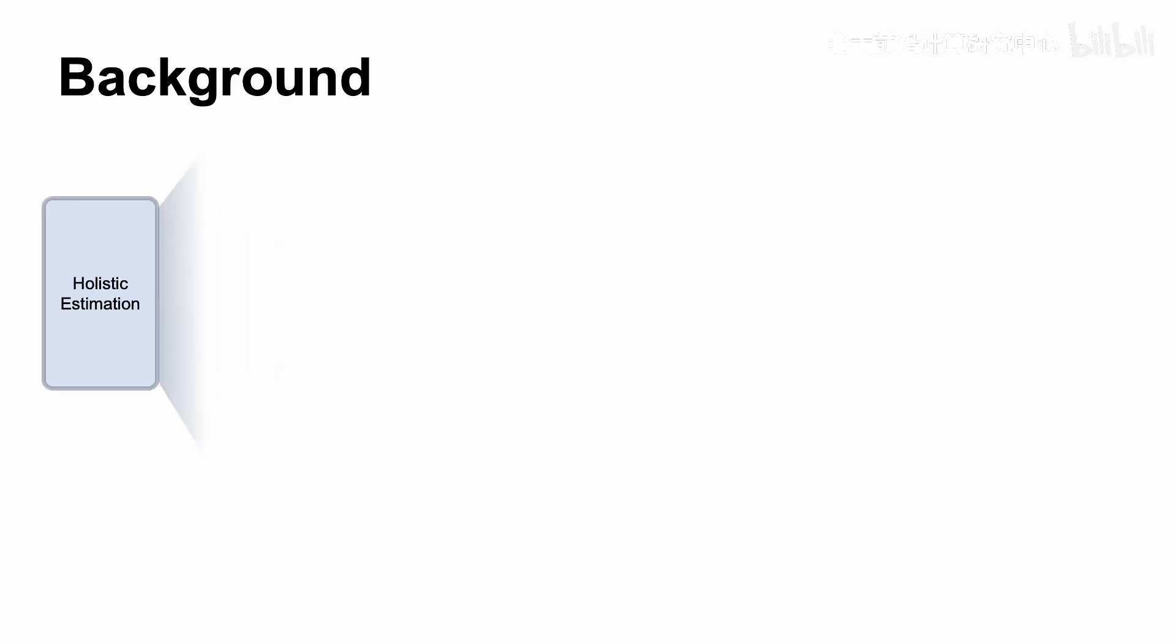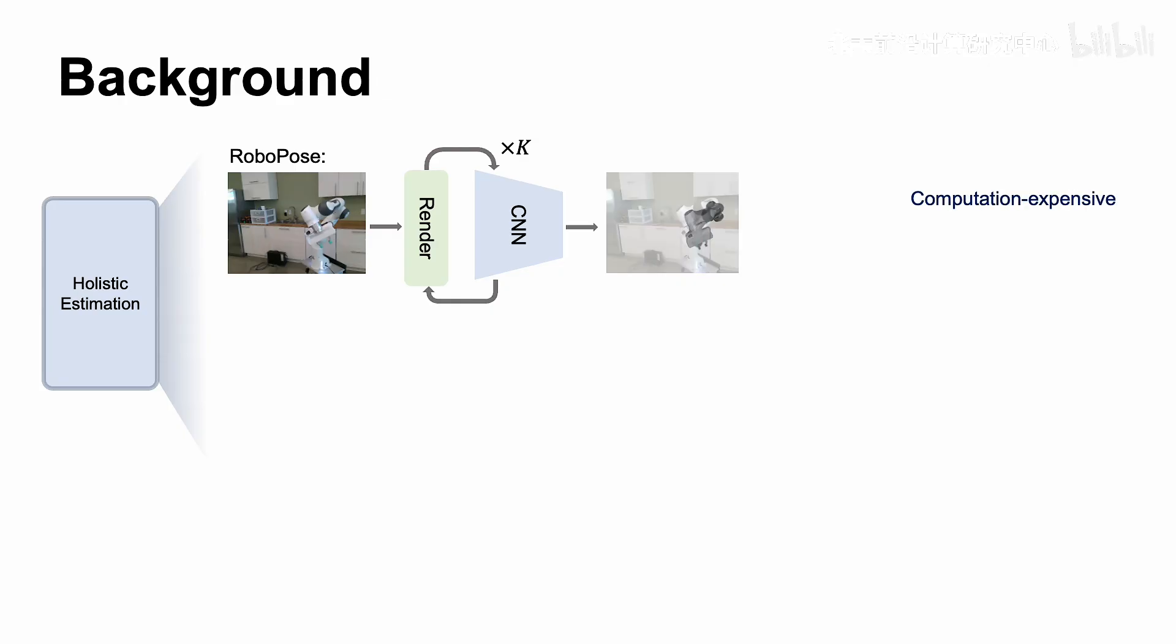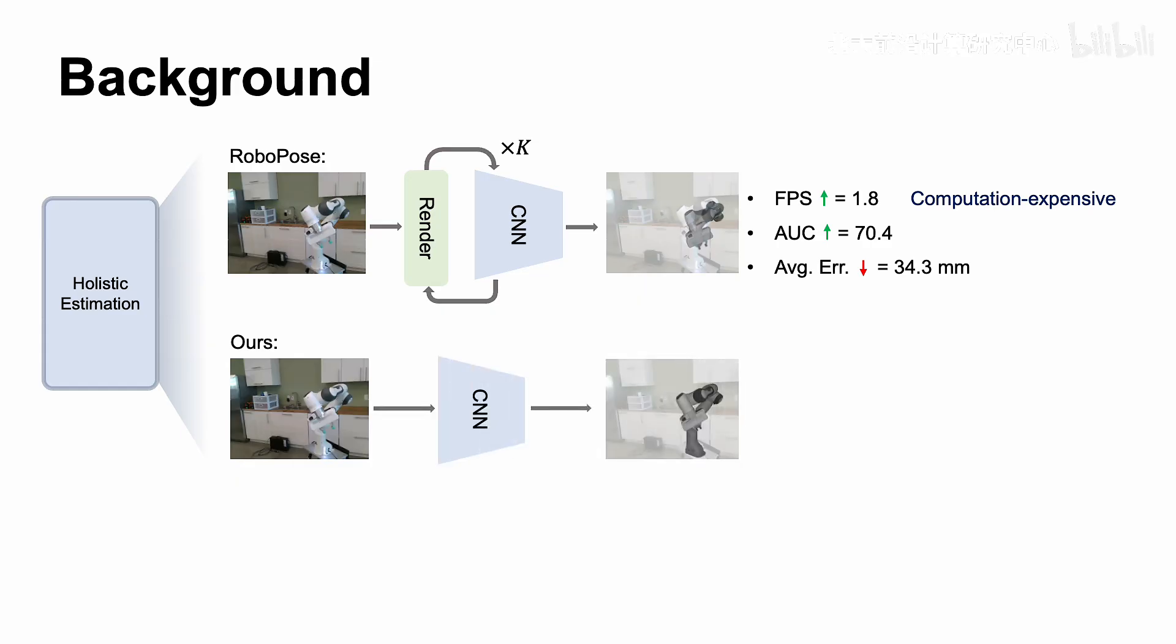However, the existing holistic estimation approach suffers from heavy computation burdens. RoboPose proposes a render-and-compare approach to iteratively refine estimation of both robot pose and joint state, but this computation-intensive optimization process limits its applications in real-time scenarios. In contrast, our method achieves inference with only a single feed-forward pass, eliminating the need for costly test-time iterative optimization. As a result, it delivers a 12 times speed boost with state-of-the-art accuracy.